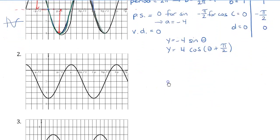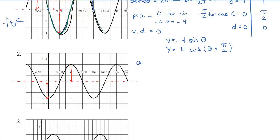Let's take a look at the next graph. This one has a vertical displacement. If I draw the central axis, it will be easier to see the amplitude. You want to draw your central axis so there's an equal amount of graph above and below it. From the central axis, I can see that this is three spaces above and three spaces below. Checking my scale — every square is 1 — so my amplitude is 3, which implies A equals 3.